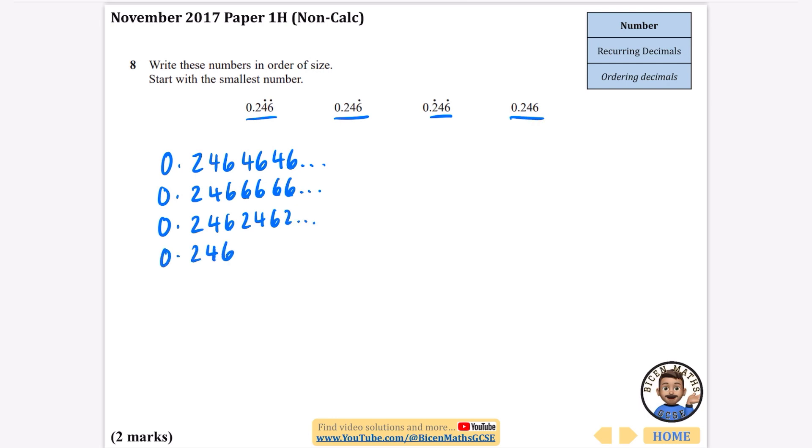The last one is just 0.246 and the rest would be zeros. If we're going to put them in order of size, we begin with the smallest which is 0.246, because this one starts with a zero. I'm going to cross that one off.